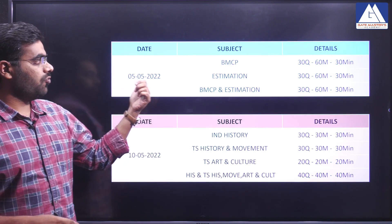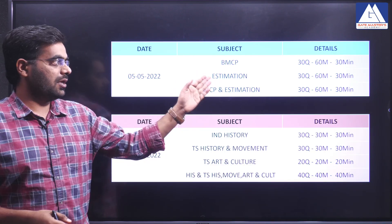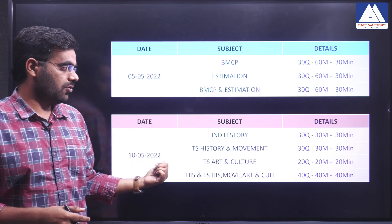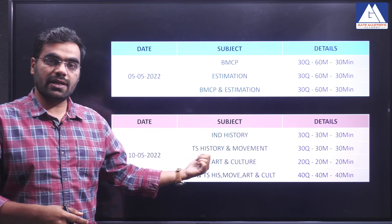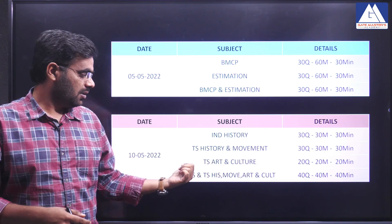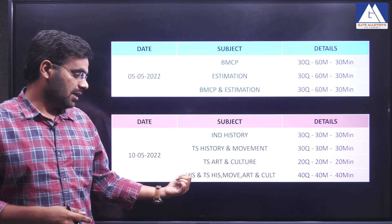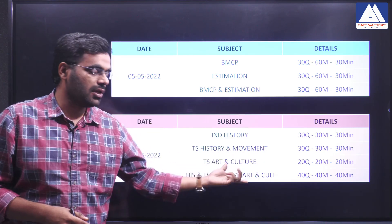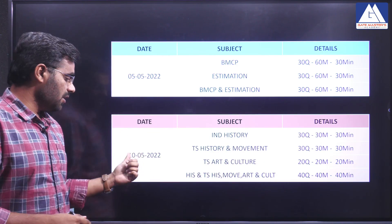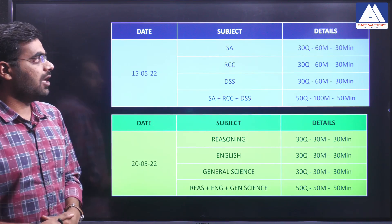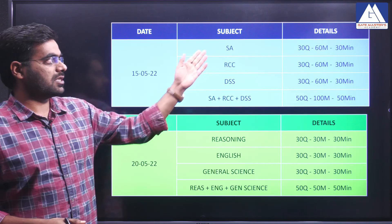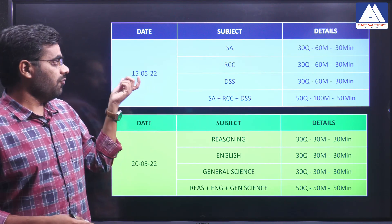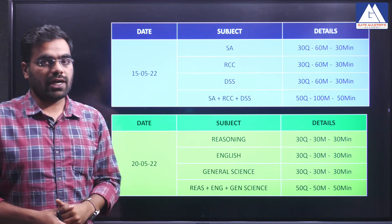On 5th May 2022, BMCP Estimation will be activated. On 10th May 2022, Indian History, TS History and Movement, TS Art and Culture, TS History, Indian History Movement, and Art and Culture — completing the GS section. On 15th May 2022, Structure Analysis, RCC, DSS, and their combination will be activated.